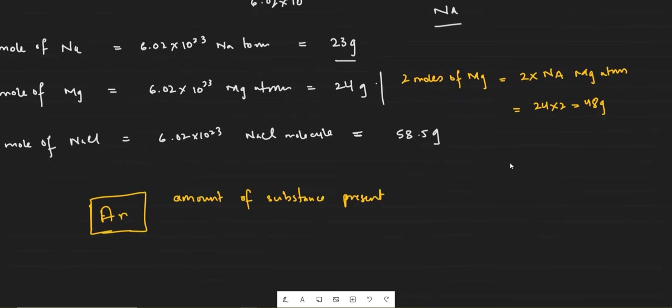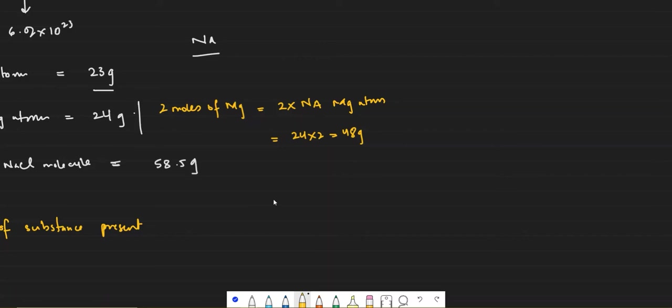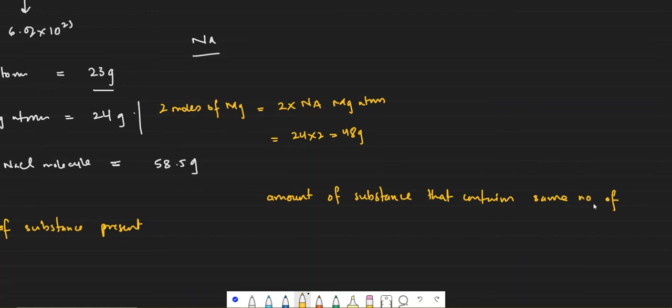Finally, let's define moles formally. One mole is the amount of any substance that contains the same number of particles — atoms or molecules — as there are in 12 grams of carbon-12 atoms.